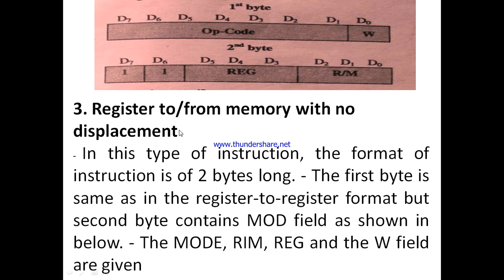The next type is register to or from memory with no displacement. 'No displacement' means the offset address is not considered here. Among this type of instruction, the format is 2 bytes long. The first byte is the same as in the register-to-register format, containing the op code and W bit.